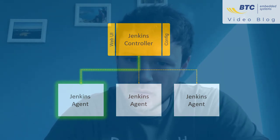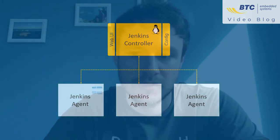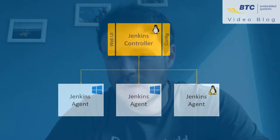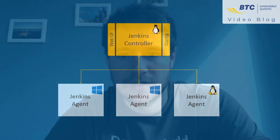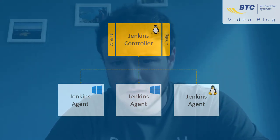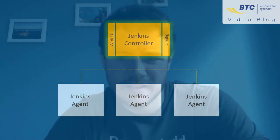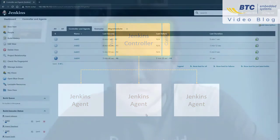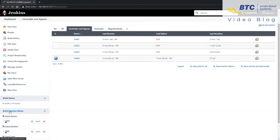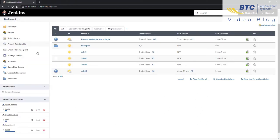This is also why it doesn't matter if your Jenkins controller is running on Windows or Linux. If a job requires a Windows environment, it's sufficient if the Jenkins agent provides that. In theory, the Jenkins controller can also be used as an executor node. This can be useful when you set things up on your own laptop for some experiments, but it's not recommended in a production setting because it would slow down the controller in its main purpose.